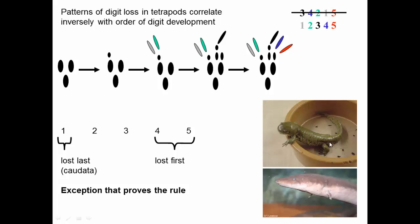In caudates, digits actually develop differently. Instead of starting with digit three and going out from the middle, they start with digit one and develop across to make five digits — so the order is one, two, three, four, five rather than three, four, two, one, five. And when that development differs, you actually see different patterns of evolution.